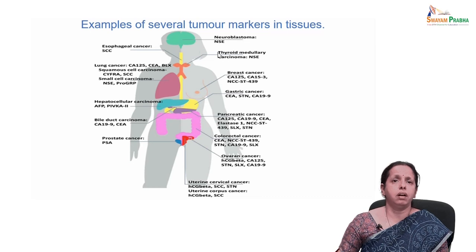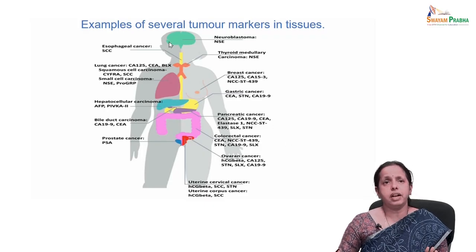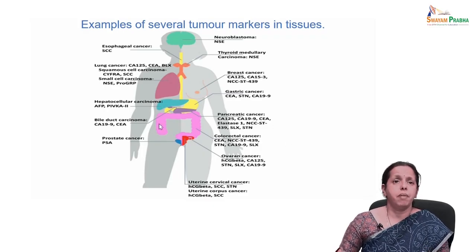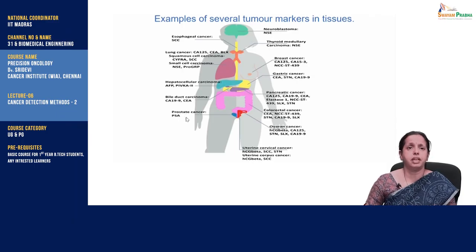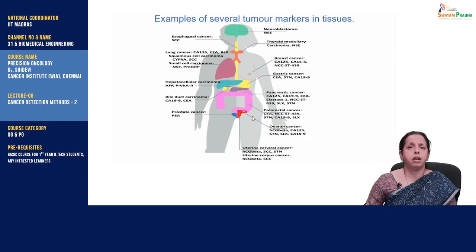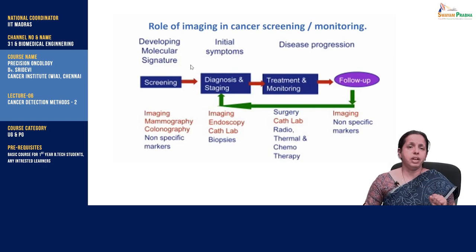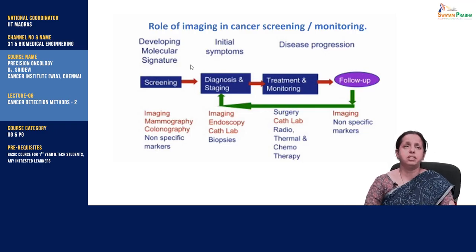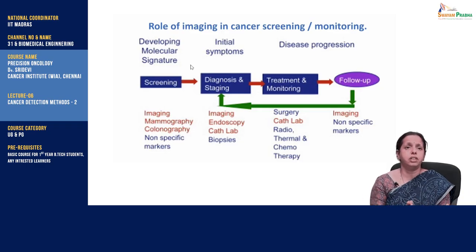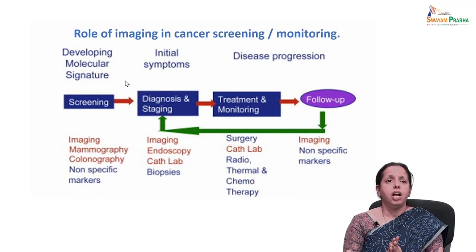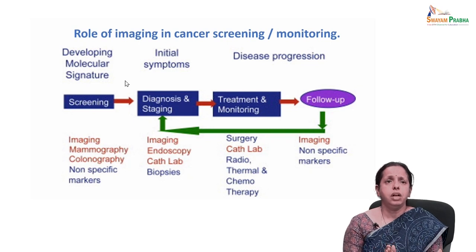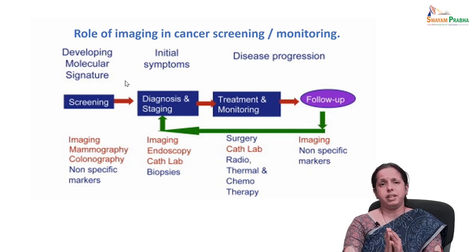AFP is a representative carcinoembryonic antigen, normally produced in the fetal liver but not after birth. Other tumor-specific markers include NSE for neuroblastoma and PSA for prostate cancer — these are all tumor-specific markers found in particular tissues.